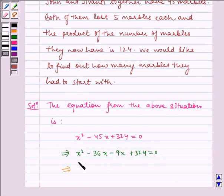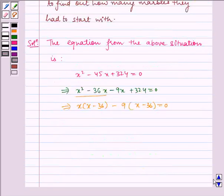Which implies taking x common we get x minus 36. Taking minus 9 common we get x minus 36 equals 0. Which implies x minus 9 into x minus 36 equals 0.